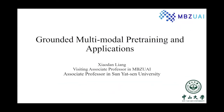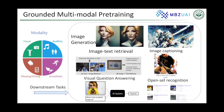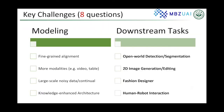My research focuses on answering four modeling questions: how to achieve fine-grained alignment, how to use more modalities, how to efficiently use large-scale noisy data, and how to develop knowledge-based architectures that can support open-world detection, 2D image generation, fashion design, and human-robot interaction.